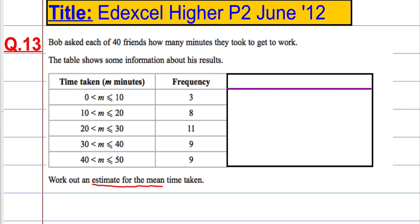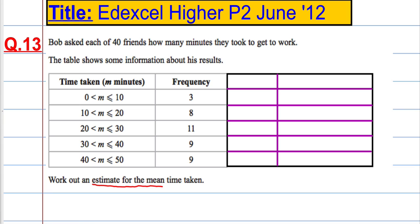The information we want in the table is the midpoint for each time taken, and then we'll do the frequency times by the midpoint. So normally when you're calculating the mean, you add up all the data and divide by how many there are. Well, the data has been grouped.